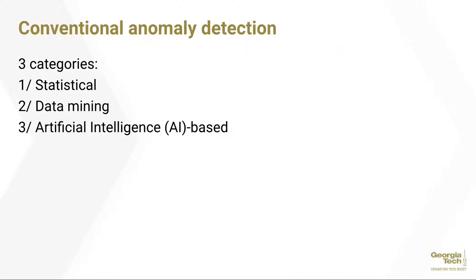Conventional anomaly detection can be looked at in three different ways. There are three categories: statistical, data mining, and artificial intelligence-based methods.